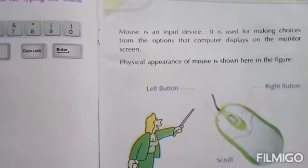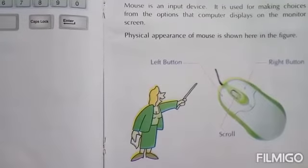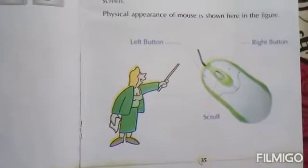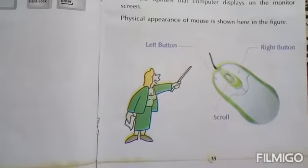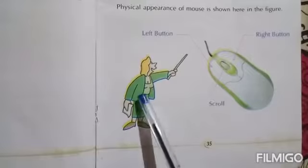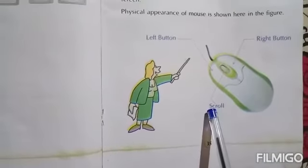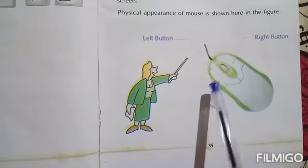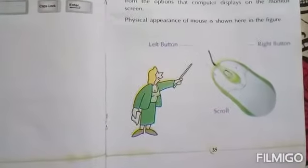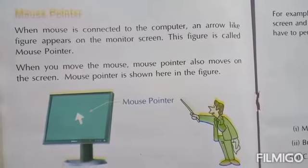The physical appearance of the mouse is shown here in the figure. The mouse has a left button, a right button, and a scroll button. The mouse is connected to the computer.